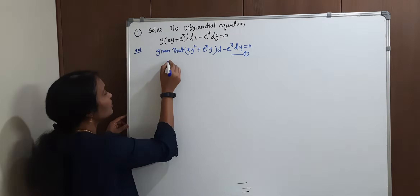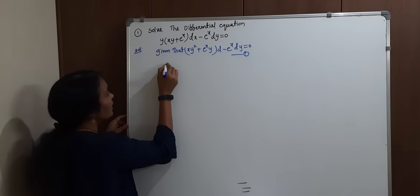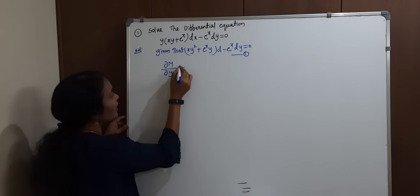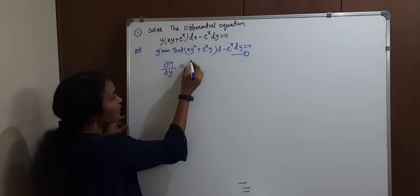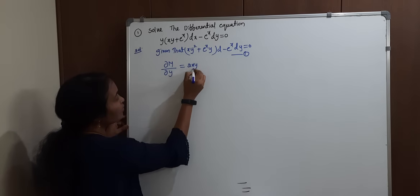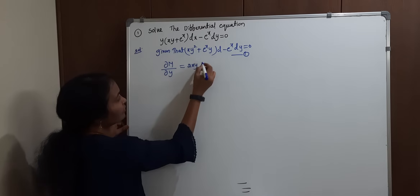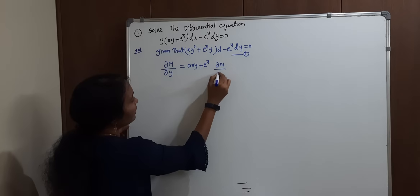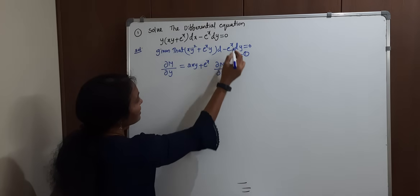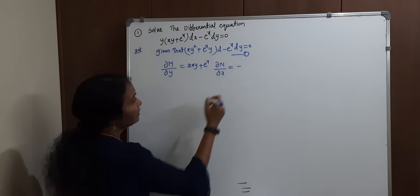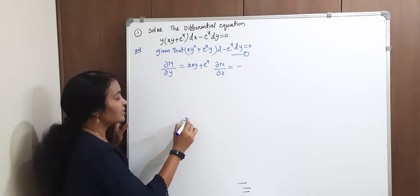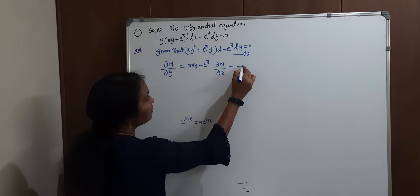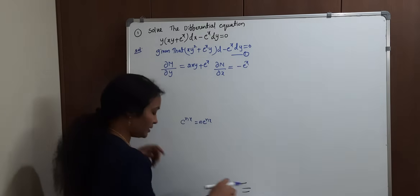I will write M directly. In this video, I will explain dou M by dou y in detail. Differentiate partially with respect to y: xy gives y differentiation = 1, x as it is. Next, dou N by dou x — with respect to x, this is negative. e to the power nx differentiation gives n into e to the power nx, so 1 into e power x, same as it is.